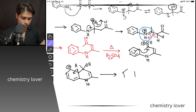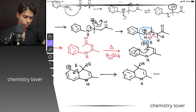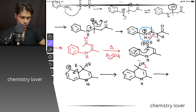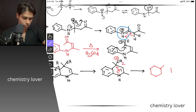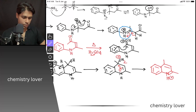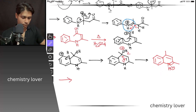So if the aromatic ring attacks over here, you are going to get a species with a positive charge. Now it will regain its aromaticity. You are going to get this species. Again, because you are doing the reaction in acidic medium, this OH group can get protonated to become OH2 plus. Now the nitrogen lone pair can push over here and this bond rearranges, giving you an NH plus intermediate, and then finally removal of a proton gives you the next species.